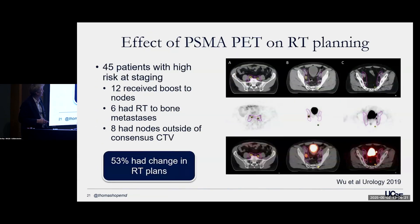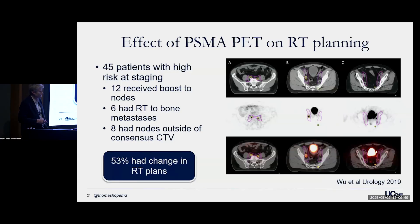Building on that, a study from here showed that 53% of patients with high-risk cancer had changes in their radiotherapy planning because of findings seen on PSMA PET — some due to lesions in bones, some due to nodes outside the field, and nodes within the field that were boosted. By knowing where the tumors are, radiation oncologists can treat patients more accurately and have better outcomes. This is still being studied in trials; we don't yet have outcome data, but we presumably will see improvement when those read out probably next year.